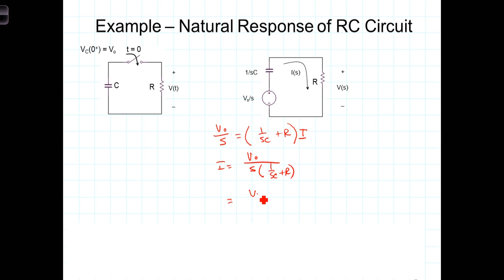And when we do that, we get that I equals V0 over 1 over C. The S is canceled there. Plus R times S.